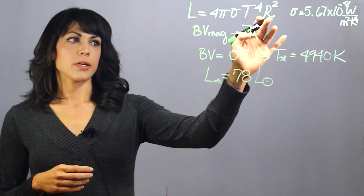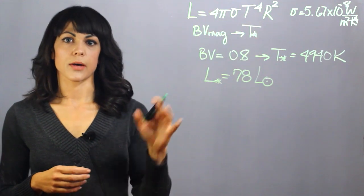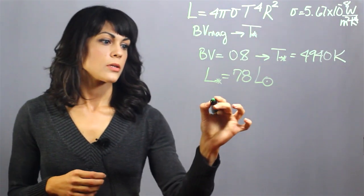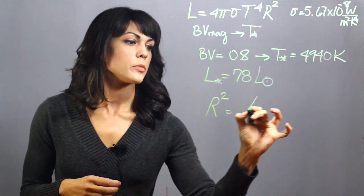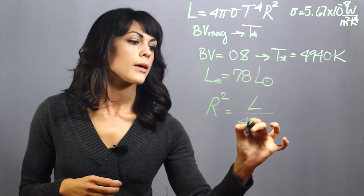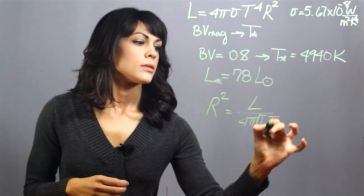Now let's solve for the radius so we can have a nice equation that will lead us to the radius. So the radius squared is equal to the luminosity divided by 4 pi sigma T to the fourth.